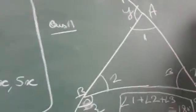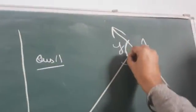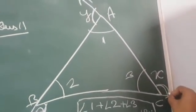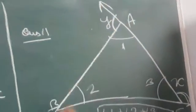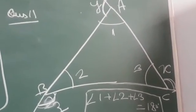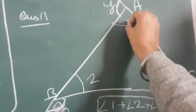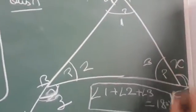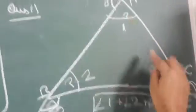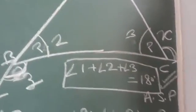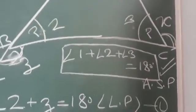Question number 11 में X, Y, Z तीनों angles का sum 360 degree prove करना है। हमको पता है angle 1, angle 2, angle 3 - ये अंदर वाले तीनों angles हैं जिनका sum 180 degree होता है due to Angle Sum Property।